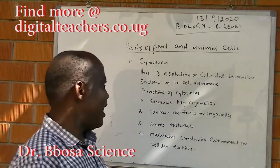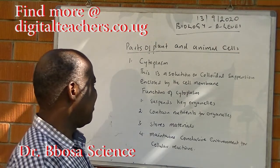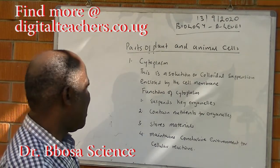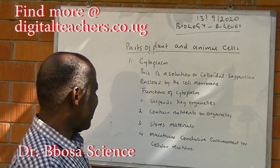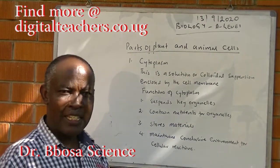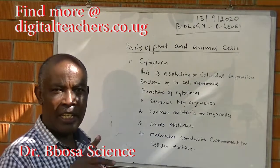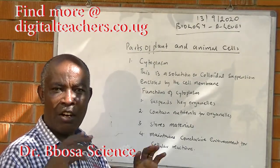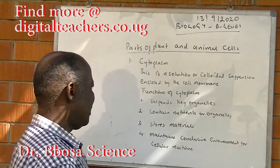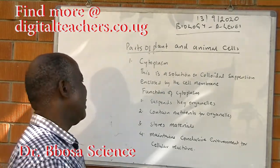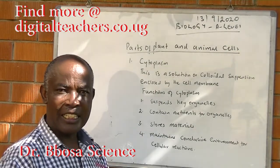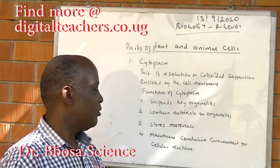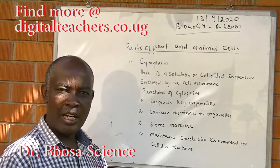Parts of plant and animal cells. One: cytoplasm. This is a solution or colloidal suspension enclosed by a cell membrane. Functions of cytoplasm: it suspends key organelles — the mitochondria, the ribosome, the nucleus are all suspended within the cytoplasm. It contains nutrients for the organelles stored as material; some materials like starch are stored in the cytoplasm. It maintains a conducive environment for cellular reactions.